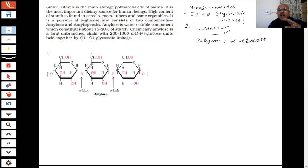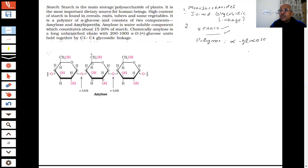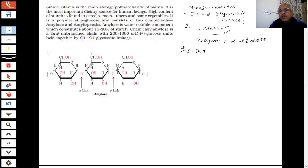When you draw the Haworth structure, the group on the right comes below and the group on the left is written on top of the pyranose structure. And starch is made up of two components. Can you name the two components of starch? This is a question in the paper — what are the two components of which starch is made up?